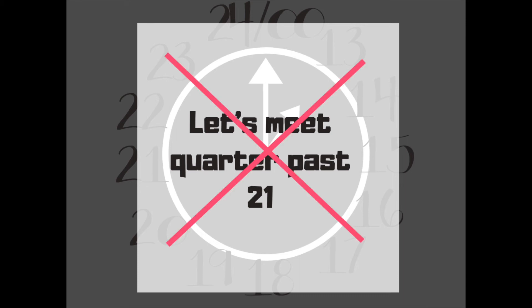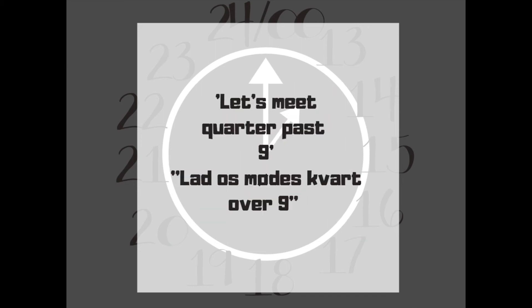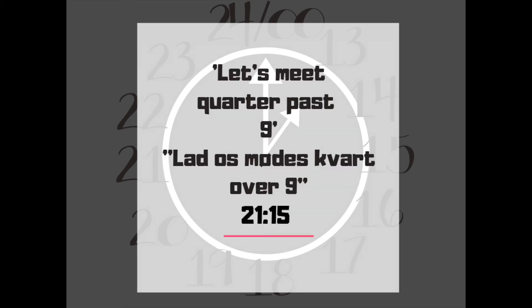In Danish, you don't say 'let's meet quarter past 21.' You say 'let's meet quarter past 9,' or in Danish: 'lad os mødes kvart over 9.' And then you specify that you're talking about the evening. But if you want to be absolutely sure that everybody knows what you mean, you say kl. 21:15, meaning 21.15.